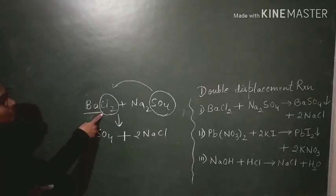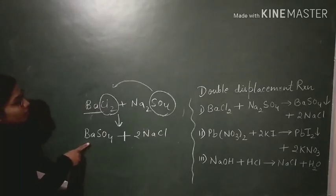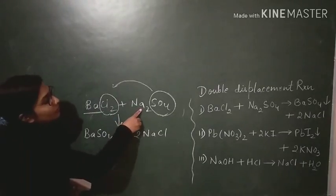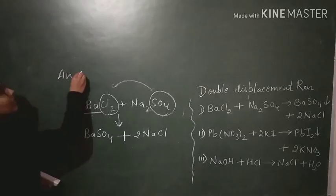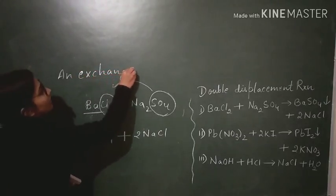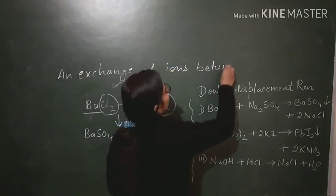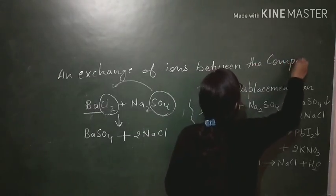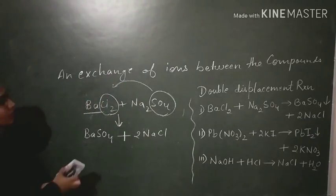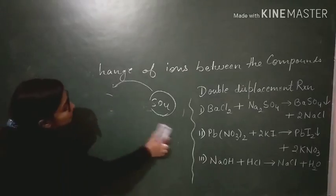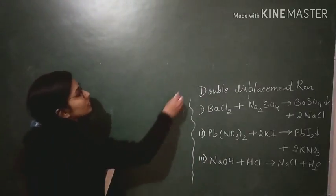In the barium compound, it was with CO3 but in the new product it is with SO4 — that is sulfate ion — forming barium sulfate. Sodium was with SO4 and now sodium is with Cl. So there is an exchange of ions between the compounds to form new products. This reaction is called a double displacement reaction.